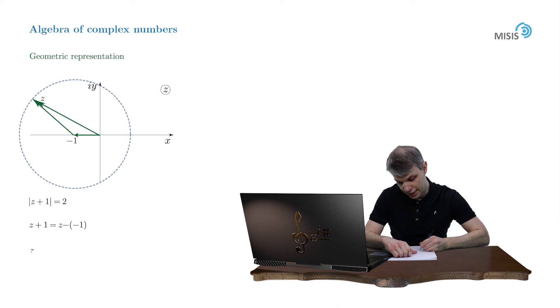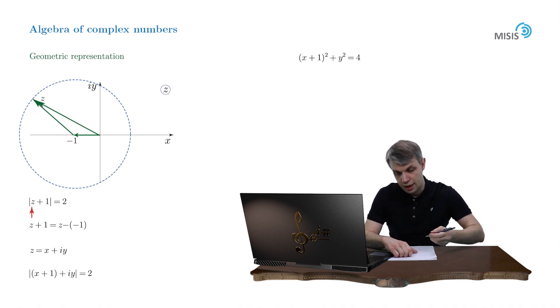So you just rewrite your complex number z as x plus iy, plug it in into your equation, and obtain that the modulus of complex number x plus 1 plus iy is equal to 2. Then you square both parts of this equation and expand the left-hand side like x plus 1 squared plus y squared is equal to 4. And of course, you obtain the same circle with the same radius.